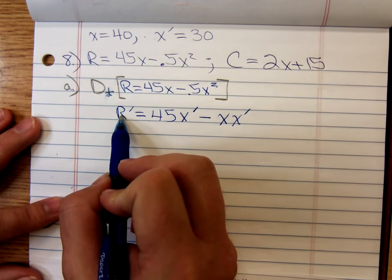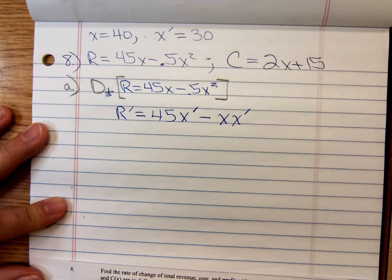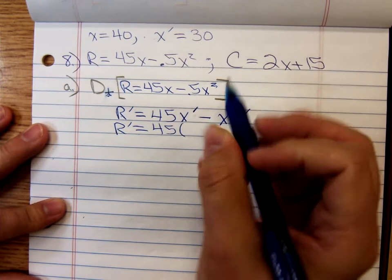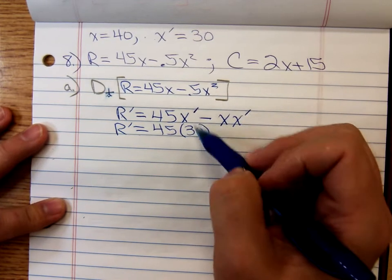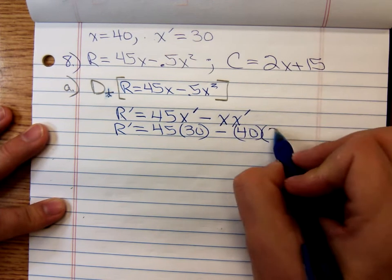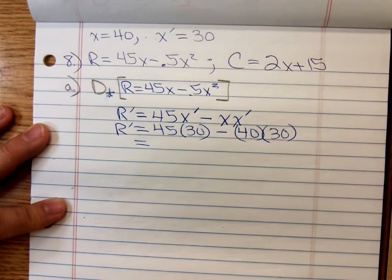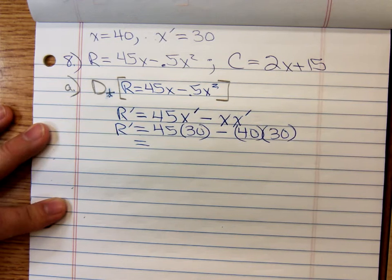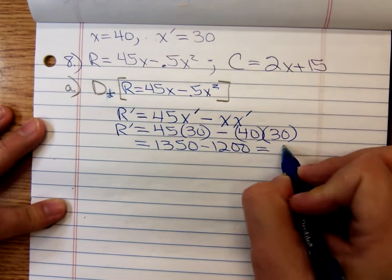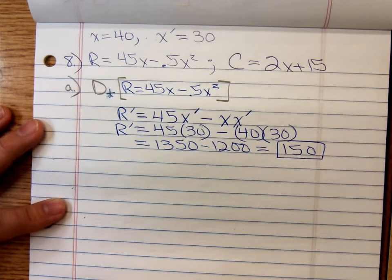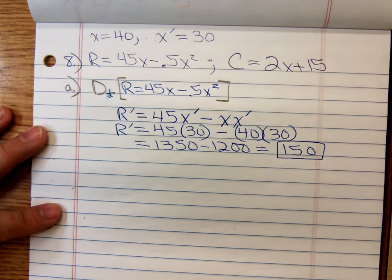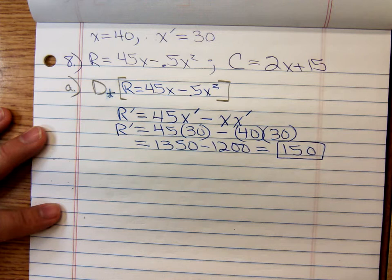2 times negative 0.5 is negative 1, X to the 2 minus 1 is X to the first power. And we want to find out how quickly is revenue changing when X is 40 and X prime is 30. We can just plug in right there. So substitute: 30 for X prime, X becomes 40, and X prime becomes another 30. We're going to get $1,350 minus $1,200, which is just giving me $150. So at this point, revenue is increasing by $150 per day.